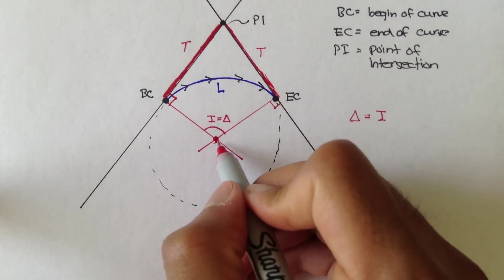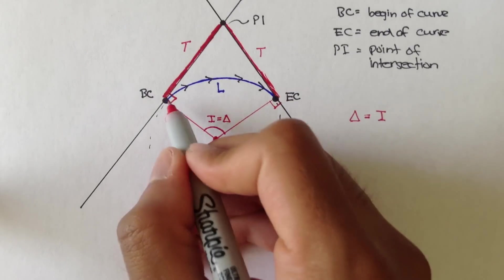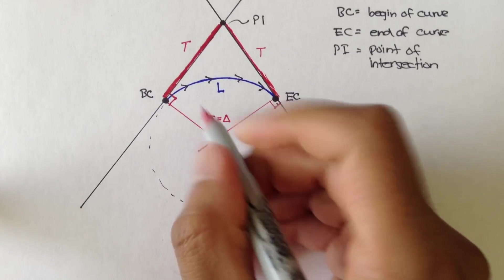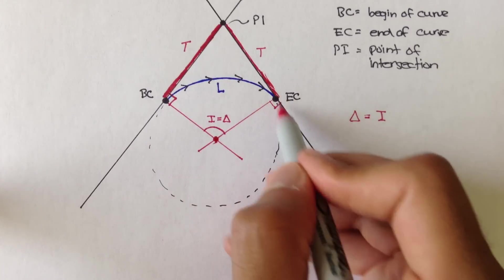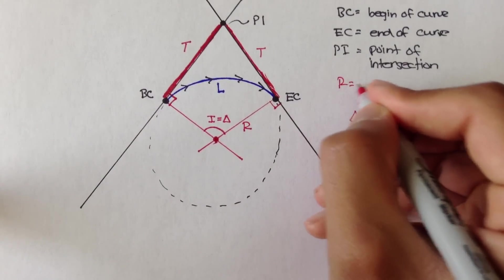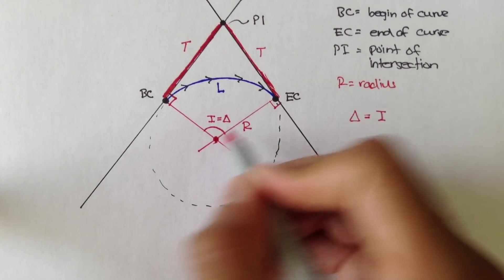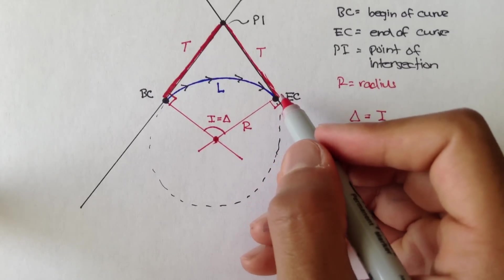That means the distance from this point to the EC, or from this point to the BC, or from this point to any point along this curve or circle is the radius. So R is radius. That's the distance from the center of the circle to the outside of the circle.